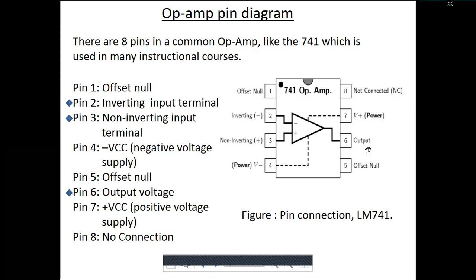These are important terms and equations related to the op-amp. 'A' stands for gain — the output of the amplifier. 'Vd' means the difference between the input voltages. When you apply input to both terminals, the output is the difference. The equation is: Vo = A(Vp − Vn), where Vo is the output voltage and A is the gain.